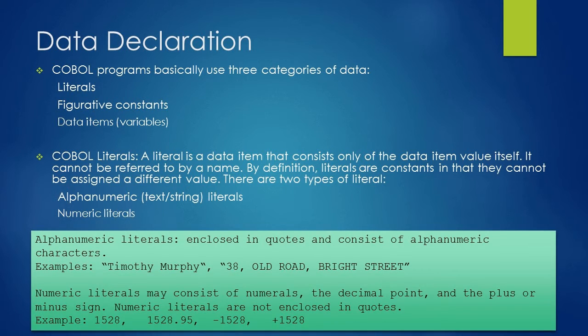Alphanumeric literals are enclosed in quotes and consist of alphanumeric characters. For example, any person name or address. On the screen, Timothy Murphy, a person name enclosed in quotes, is a literal.